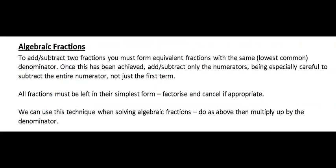We'll start looking at our algebraic fractions. To add or subtract two fractions you must form equivalent fractions with the same lowest common denominator. Once this has been achieved, add and subtract the numerators, and just be careful to subtract the entire numerator not just the first term. All fractions must be left in their simplest form, so you would lose marks on that. Factorize and cancel if appropriate.